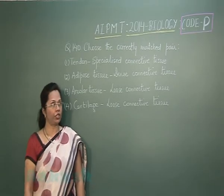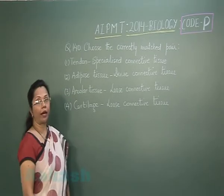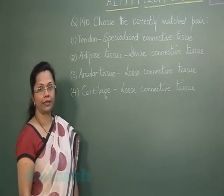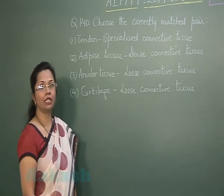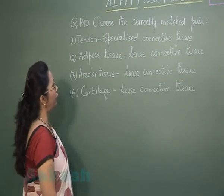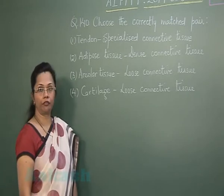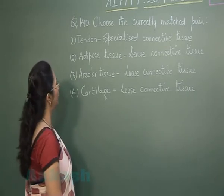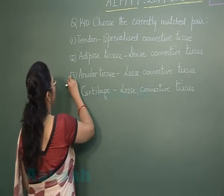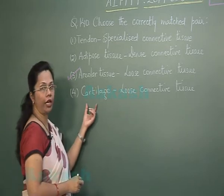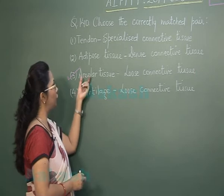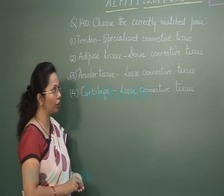Question number 140: choose the correctly matched pair. Tendon — specialized connective tissue? No, tendons are dense regular connective tissue. Adipose — dense connective tissue? No, it is loose connective tissue. Areolar — loose connective tissue? This is correct. Cartilage — this is specialized connective tissue and not loose. So our answer is option 3: areolar, which is loose connective tissue.